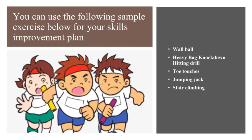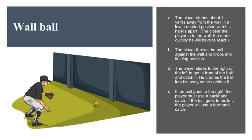Sample exercises include Wall Ball, Heavy Bag Knockdown Hitting Drill, Toe Touches, Jumping Jack, and Stair Climbing. Wall Ball: The player stands about 4 yards from the wall in a low crouched position with hands apart. The closer to the wall, the more quickly he must react. The player throws the ball against the wall, drops into fielding position, slides right or left to get in front of the ball, and catches it, cradling it into his body.